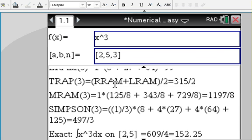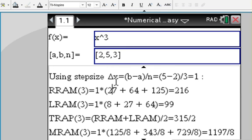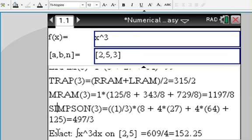You scroll down and you can see that the step size is then 1—five minus two divided by three. The right Riemann sum, left Riemann sum, trapezoid, midpoint Riemann sum, and Simpson will give you those exact values.